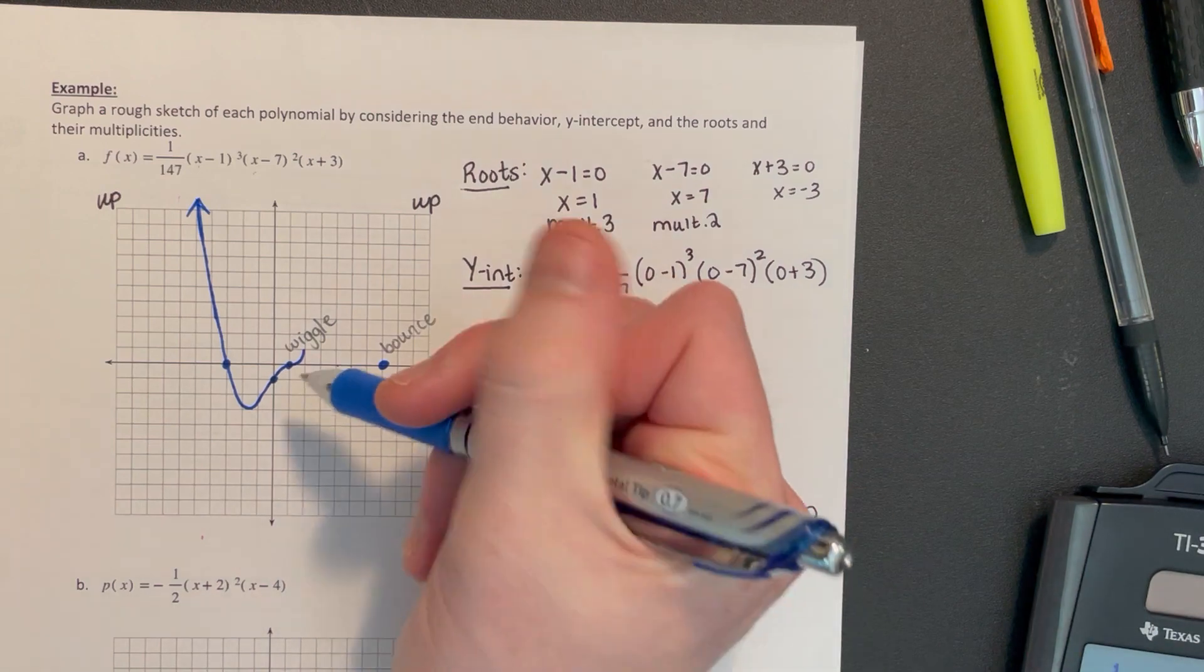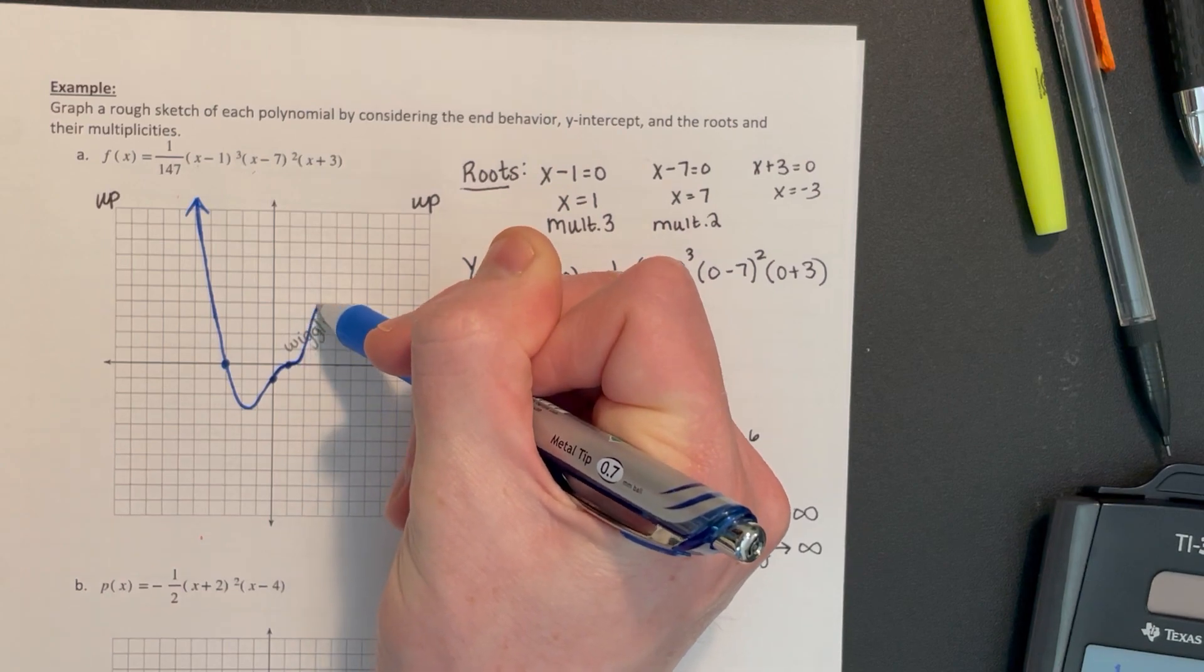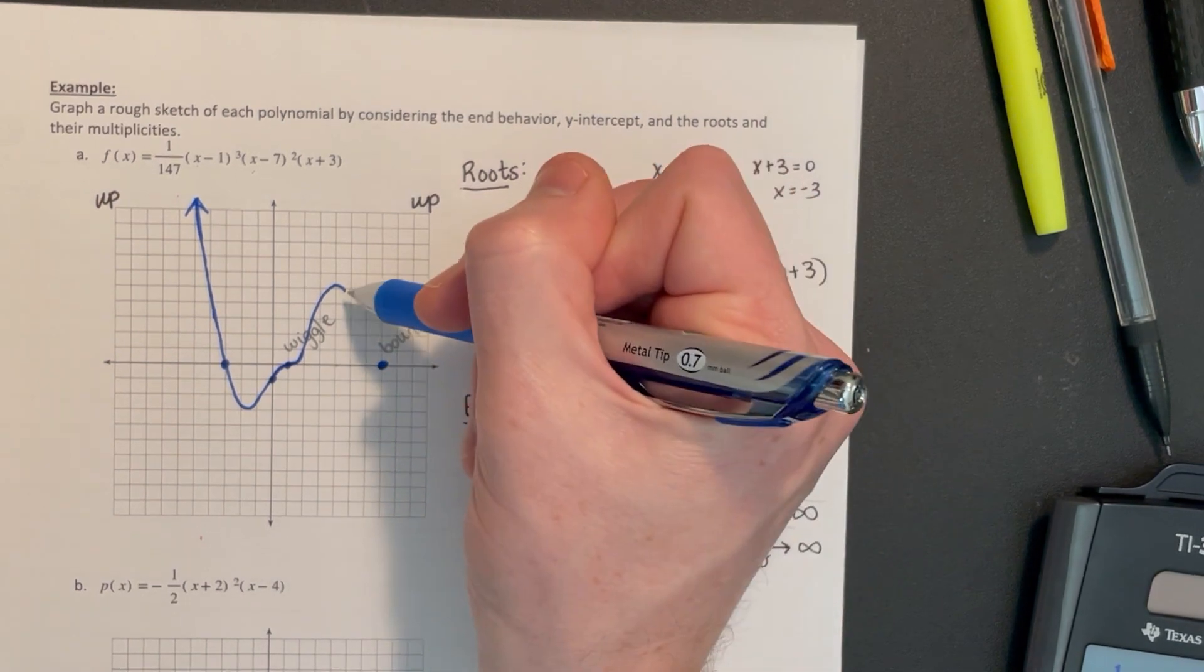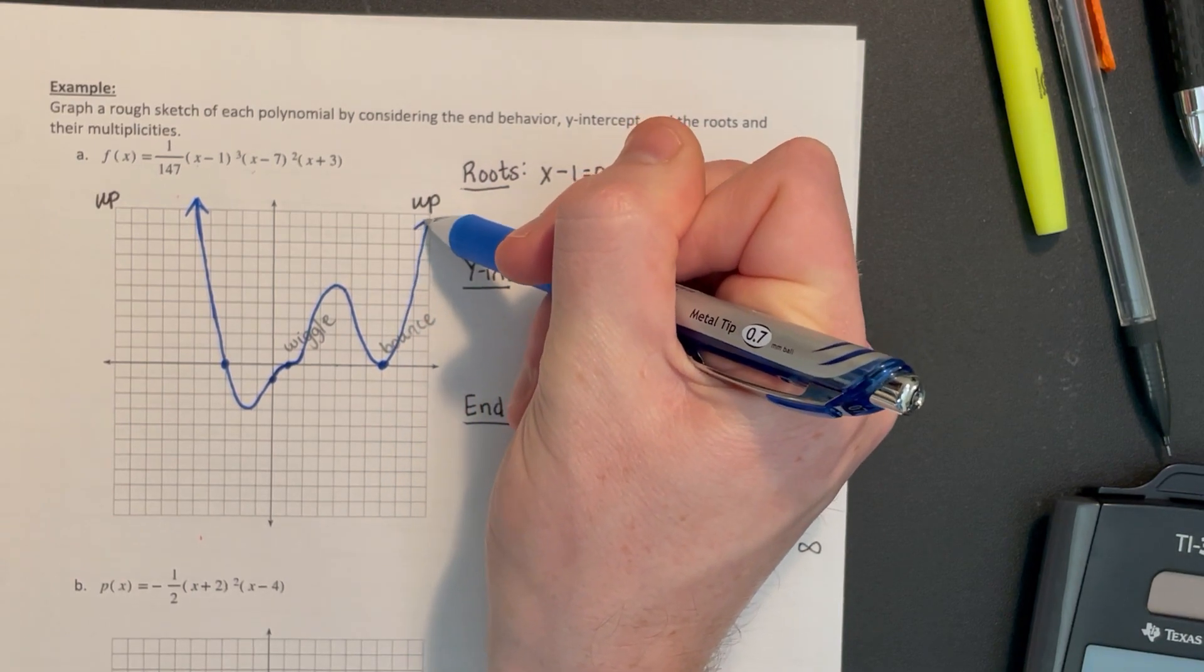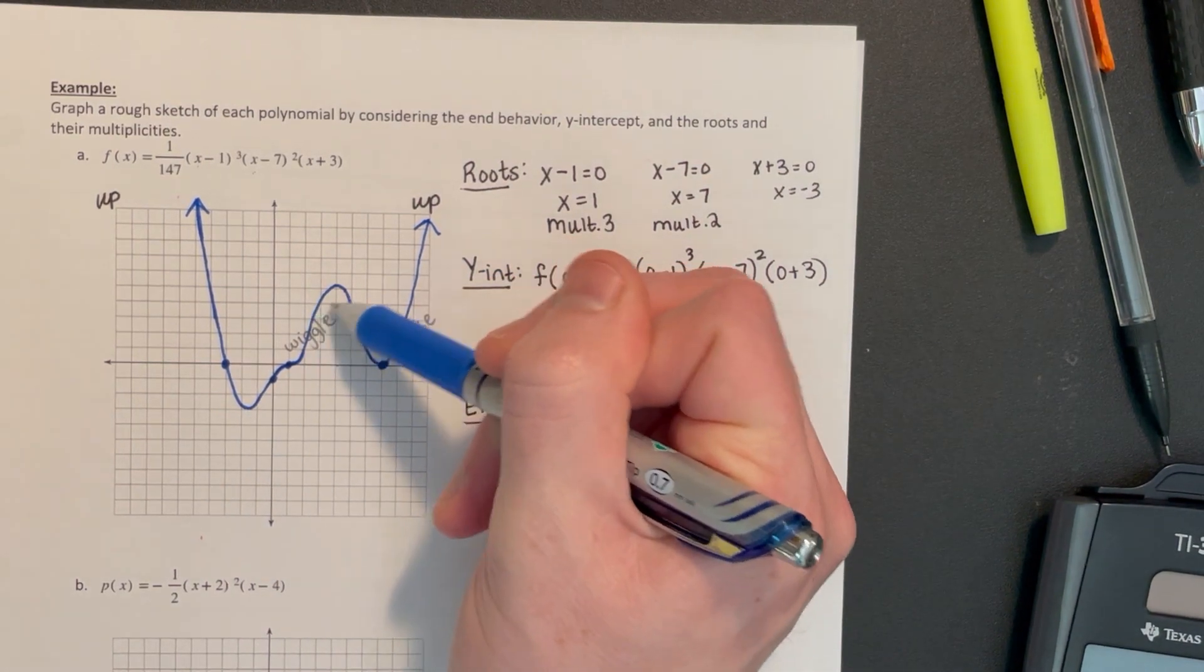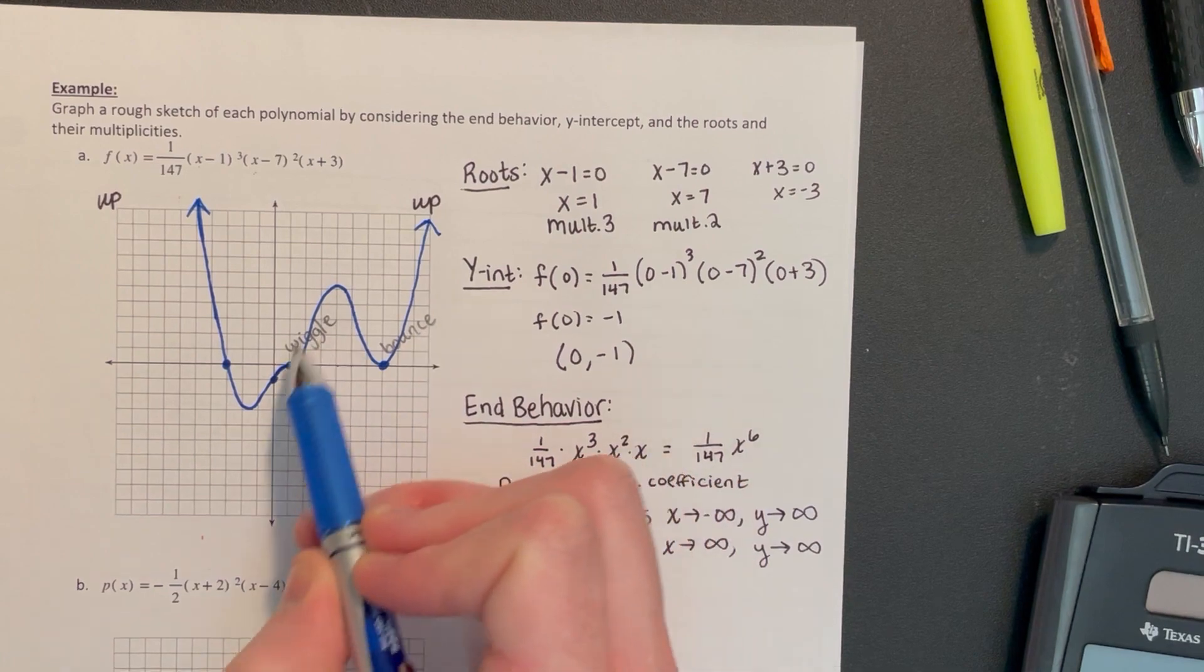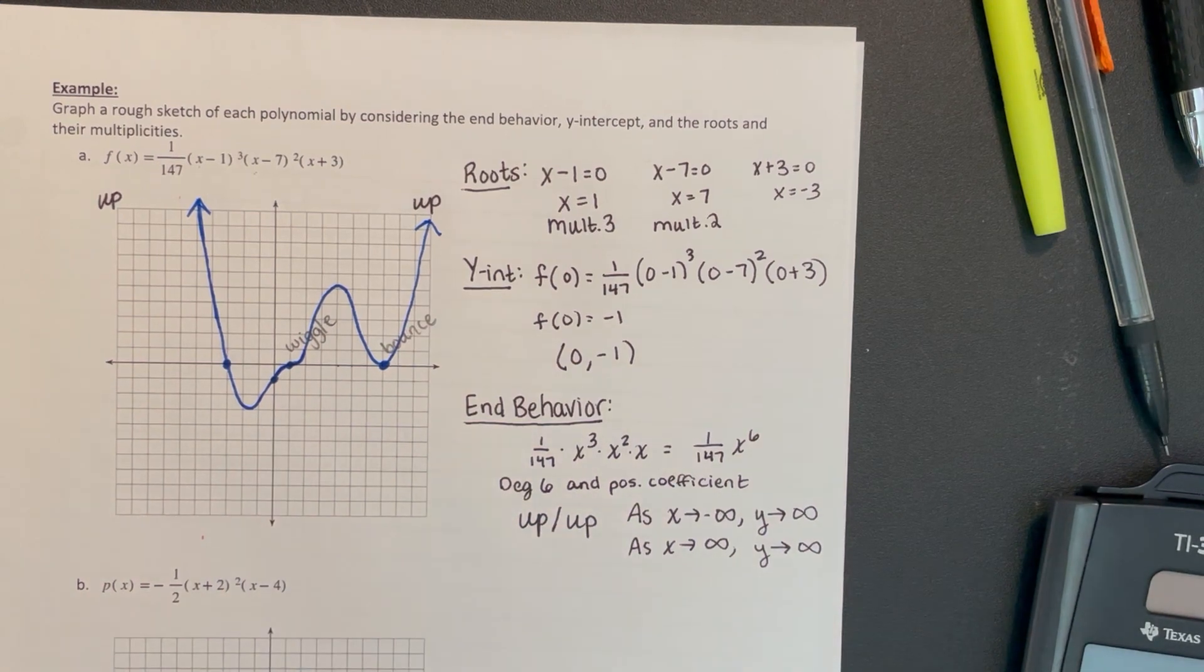And wiggle through that x-intercept at 1. That wiggle should look like a little cubic behavior. And at some point, we have to turn back down so that we can go back through the x-intercept at 7. I'm going to go back down and bounce off the axis and go back up. We have no idea how far down and up these relative maximums go. We would need calculus or a graphing tool to actually figure out those maximums. But for now, we're just sketching. We can see the end behavior, the behavior of the roots, and where the y-intercept is.